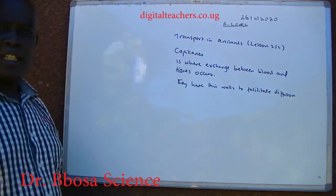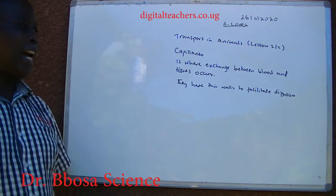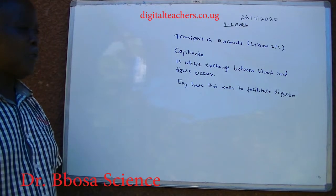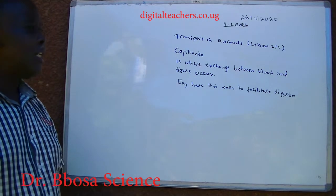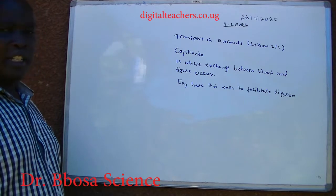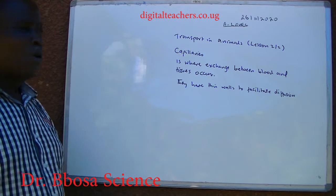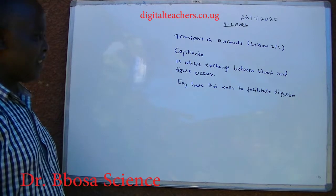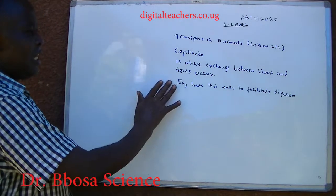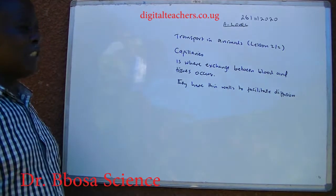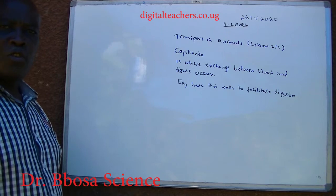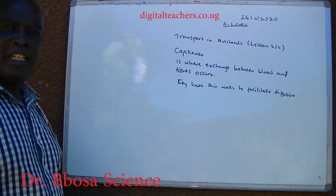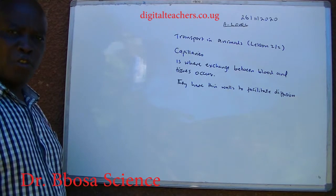Capillaries are blood vessels where exchange between blood and tissue occurs. They have thin walls to facilitate diffusion.